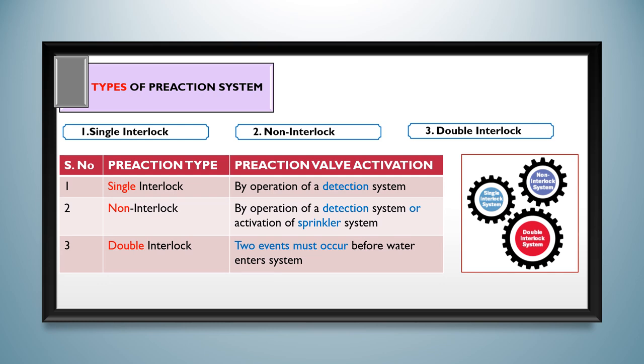For non and single interlock systems, maximum sprinklers per valve shall be 1000. For double interlock systems, maximum capacity as per NFPA 13 shall be 500 gallons with 60 seconds discharge requirements.